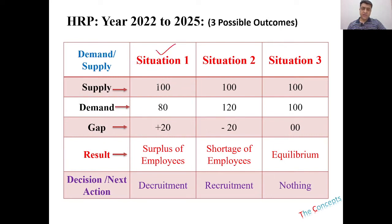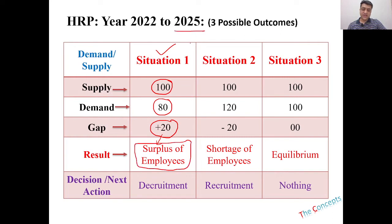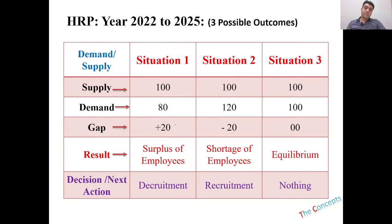Let's look at situation one: we have 100 employees and we will be needing only 80 employees in 2025. The gap is plus 20. We say plus because we need fewer people in 2025, so we are expecting a surplus of employees. Because it's a surplus, we give it a positive sign.